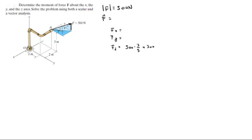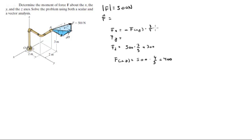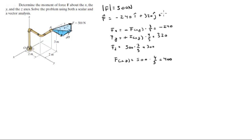Next, find the projection F has onto the plane parallel to X and Y — call it F_XY. This projection is given by 500 times 4 over 5, which is 400. From this projection, we find the X and Y components. The X component is negative because it points in the negative X direction: 400 times 3 over 5 equals negative 240. The Y component is positive: 400 times 4 over 5 equals positive 320. So the Cartesian vector form of the force is F = -240i + 320j + 300k.